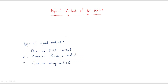Hello everyone. In this session we will discuss the next topic: speed control of DC motor. Speed control is a very important part because for any motor we have so many applications by varying the speed, and different applications have different speeds. We have some methods to control the speed.